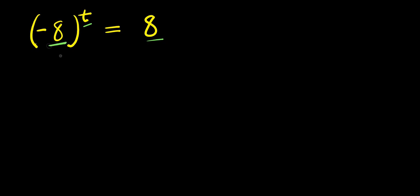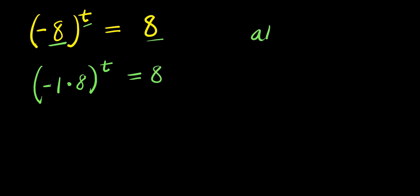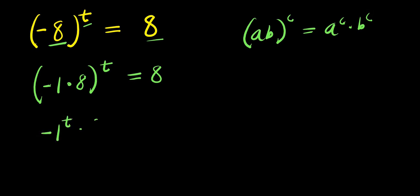Now this negative 8, I'll write it as negative 1 times 8 power t equals 8. I consider the rule that if I have a times b, raised to the power c, that equals a power c times b power c. So this becomes negative 1 power t times 8 power t equals 8.